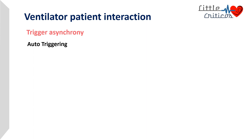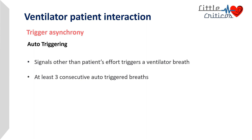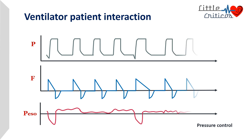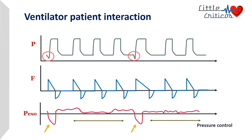Auto-triggering occurs when signals other than the patient's effort trigger a ventilator breath. In pressure-controlled mode of ventilation, after the first patient-triggered breath, there are three consecutive breaths not triggered by the patient, followed by a patient-triggered breath and then more auto-triggered breaths. Esophageal pressure changes are evident only in the first and fourth breaths; the remaining three breaths are auto-triggered.